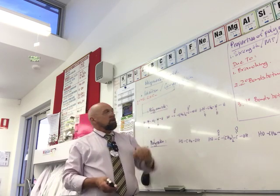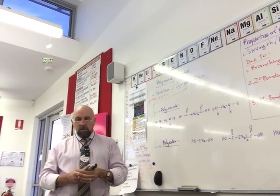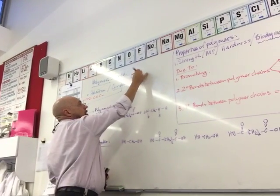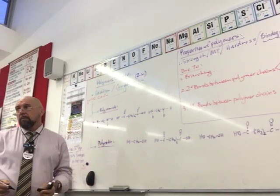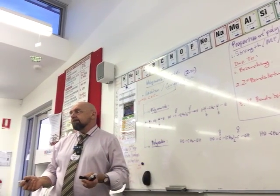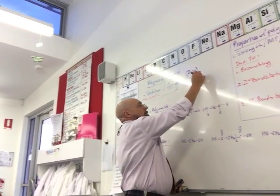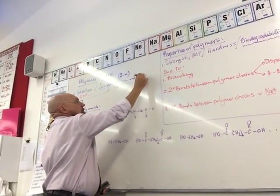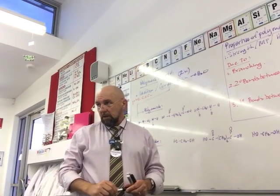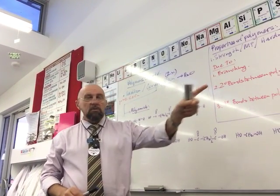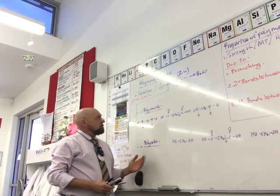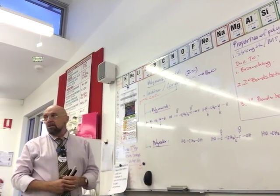Condensation polymers involve at least two monomers — condensation is at least two, can be more — that come together. The reason why it's called condensation is it produces water, so one of the products of that reaction for every link we form in the chain is going to be water.